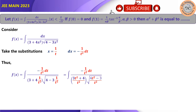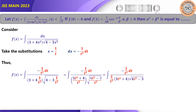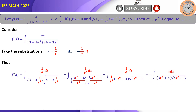Taking t² common under the square root gives a factor of t. After simplification, t cancels appropriately and we arrive at: minus the integral of t dt divided by (3t² + 4) times √(4t² − 3).